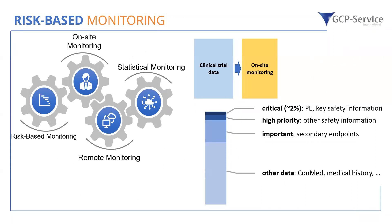From our experience, especially what I would categorize as 'other data' contains a lot of information. In a very unhealthy study population, for example in cancer trials, patients would have massive medical history as well as a lot of concomitant medication. Reviewing all of this can amount to as much work as reviewing the rest of the patient's data. And in the trial evaluation, this information is not even considered to a high degree.